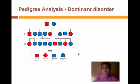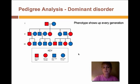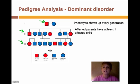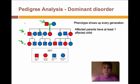A couple of important characteristics of a dominant disorder pedigree: first of all, the phenotype shows up in every generation, so you're going to see at least one affected individual in every generation. The other thing is that affected parents will have at least one affected child — not every child has to be affected. The horizontal line indicates parents, and the vertical lines coming down indicate their children. In generation two, these parents have five children — three of those children are affected by the disorder.